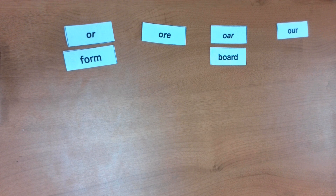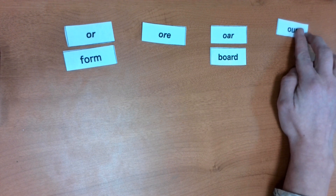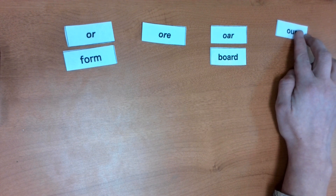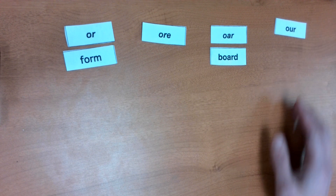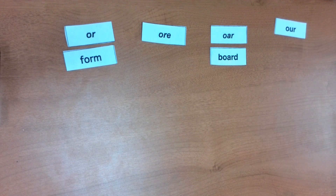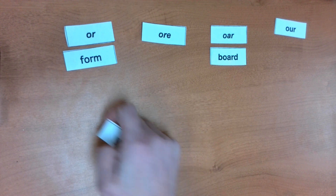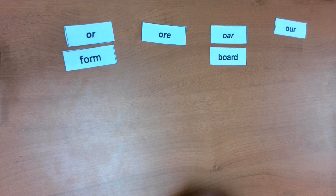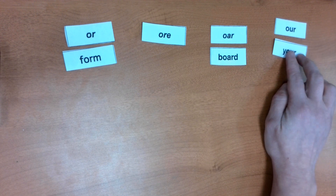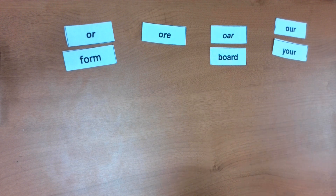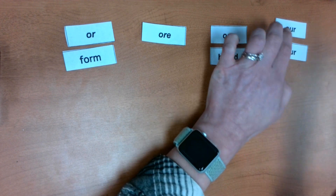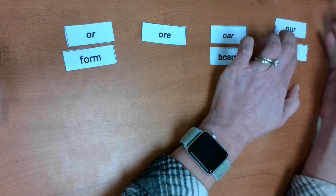When we typically think about O-U, we think about 'out' or 'house', right? But when O-U is followed by an R, it's going to be more like an O sound — like in the word 'your'. So this one is going to have an OR sound to it.